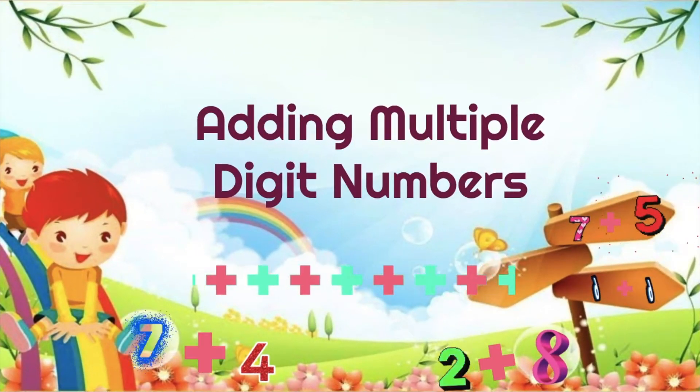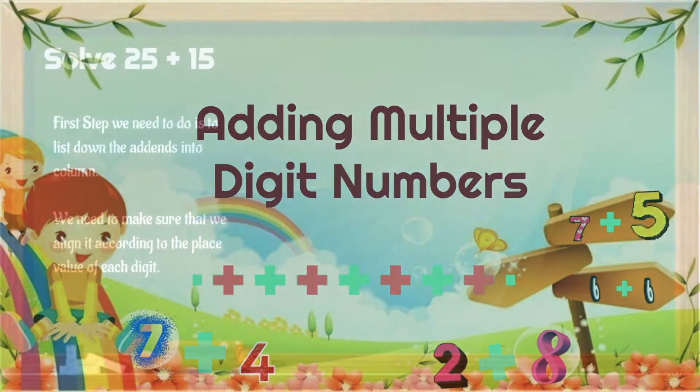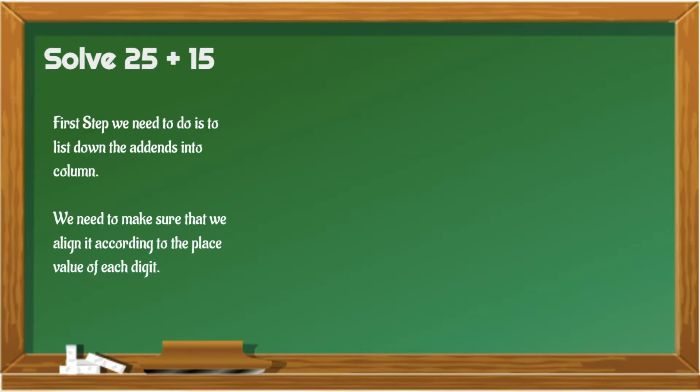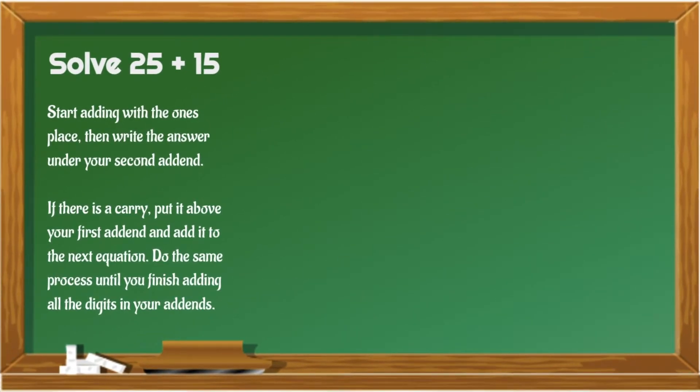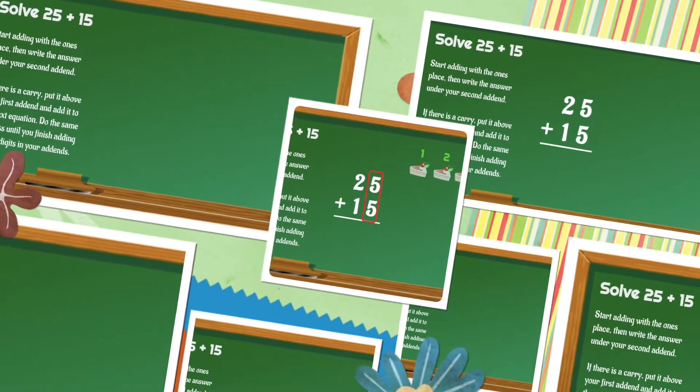Now, let's proceed with adding multiple digit numbers. For our first example, let's solve 25 plus 15. The first step that we need to do is to list down the addends into columns. We need to make sure that we align it according to the place value of each digit. Next, we start adding in the ones place. Then, write the answer under your second addend. If there is a carry, put it above your first addend, and add it to the next equation. Just do the same process until you finish adding all the digits in your addends. Let's try it!